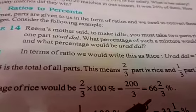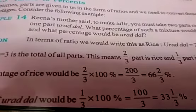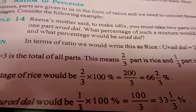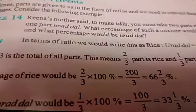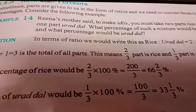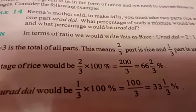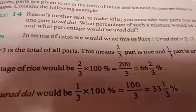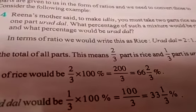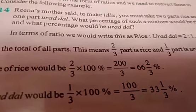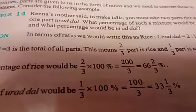So approximately you have to take 66 grams of rice. Then what about dal? Dal will be 1 by 3 into 100, that is 100 by 3, which is 33 and 1 by 3 percent of dal. So if you are mixing these two — rice plus dal — in the proper ratio, your idlis will be exactly fine; otherwise they will not have the proper softness. That is an example of how we find ratio to percentage.